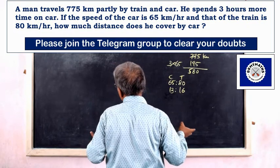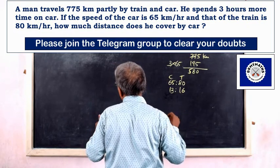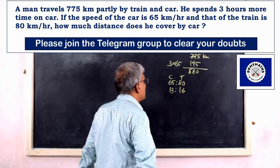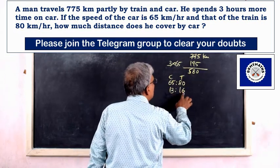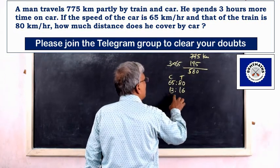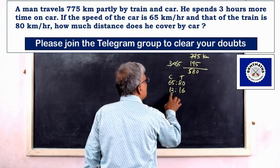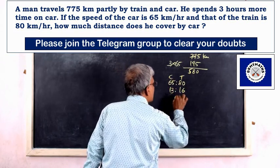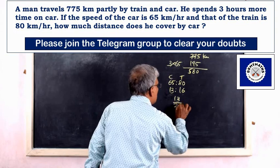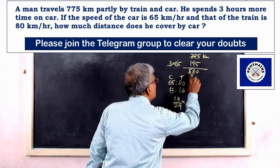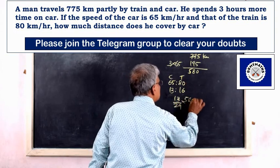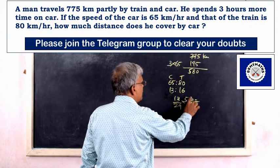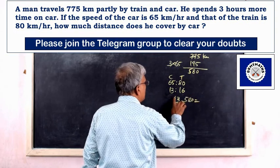How much distance does he cover by car? The total distance is 775 km. With ratio 13 to 16, we calculate 13 by 29 into 775. 13 by 29 gives 20 into 13.